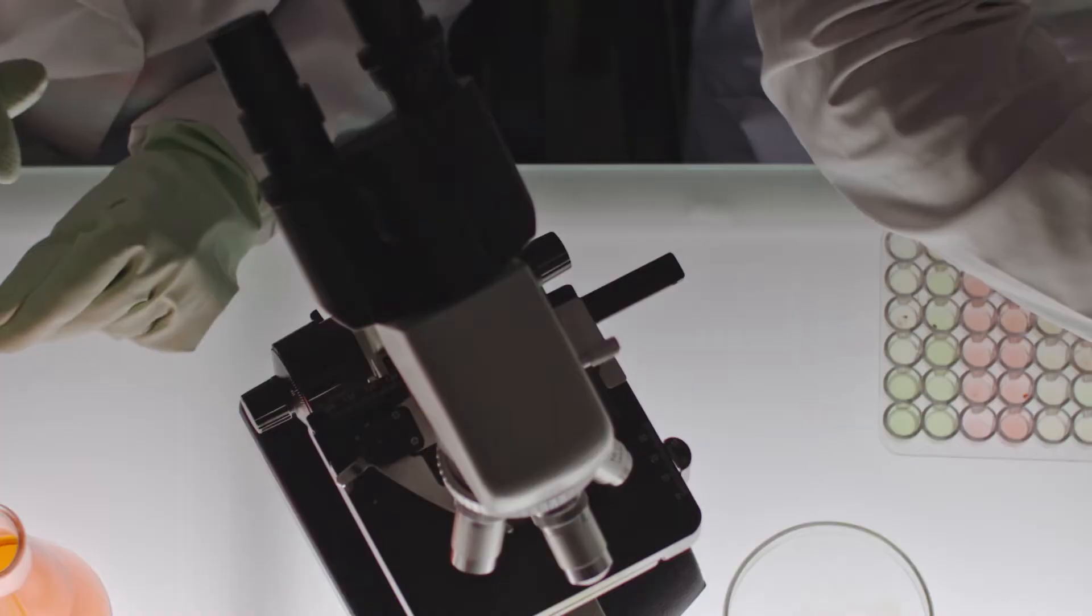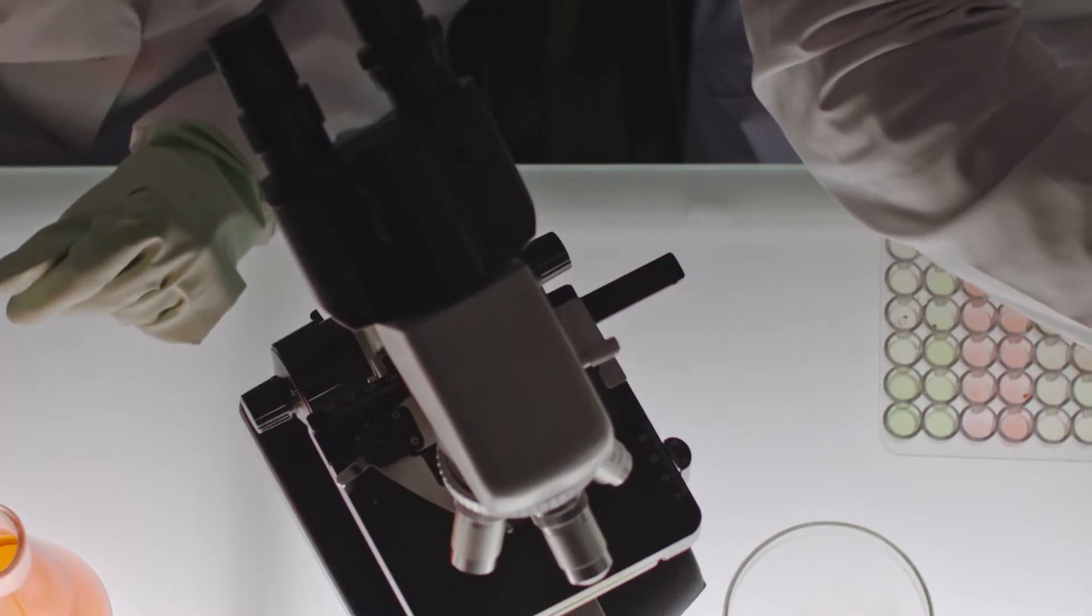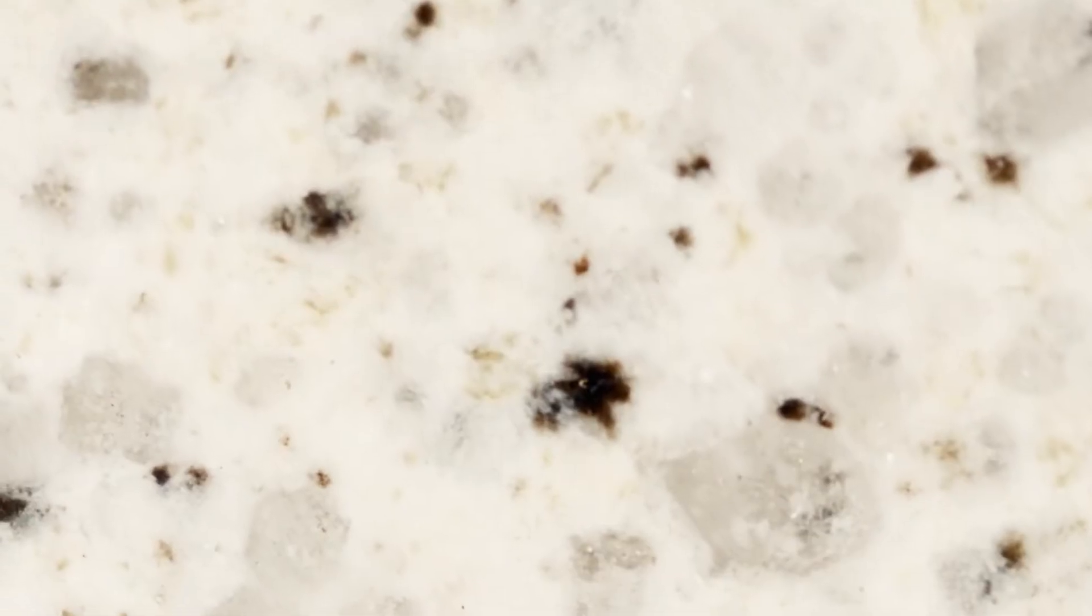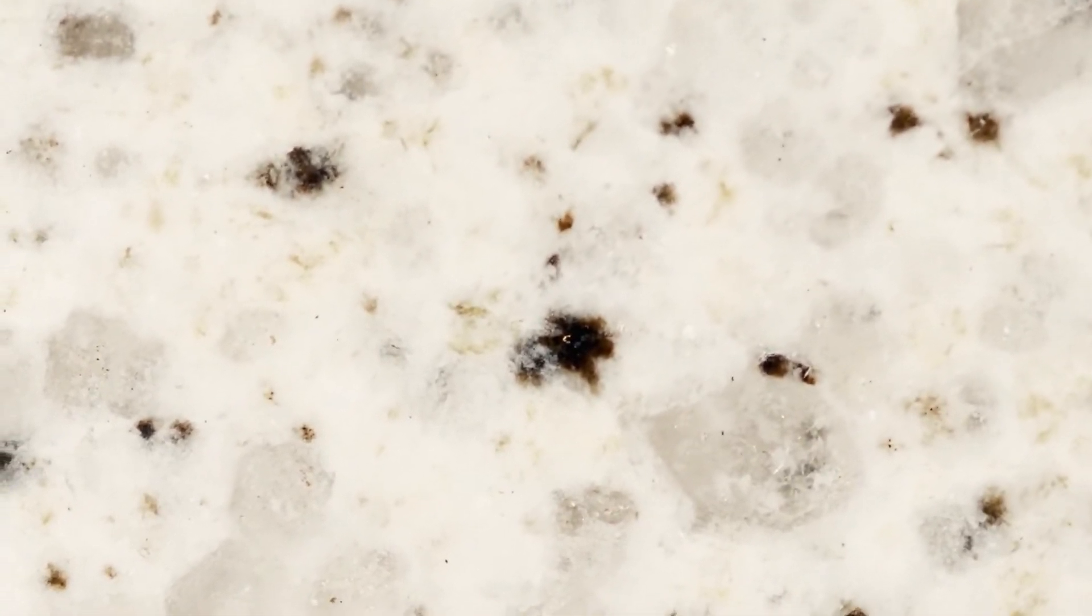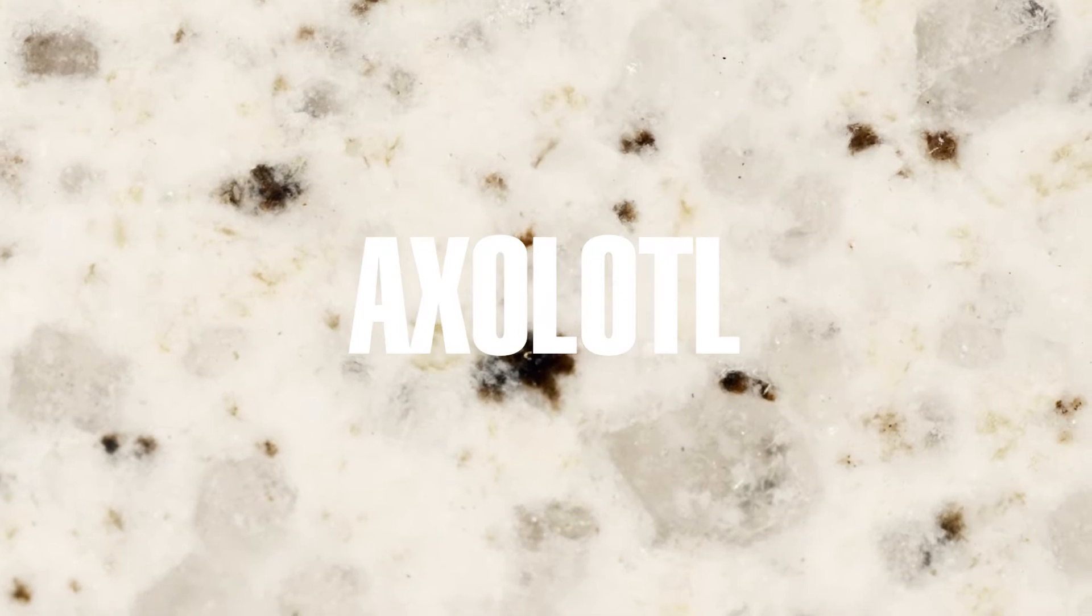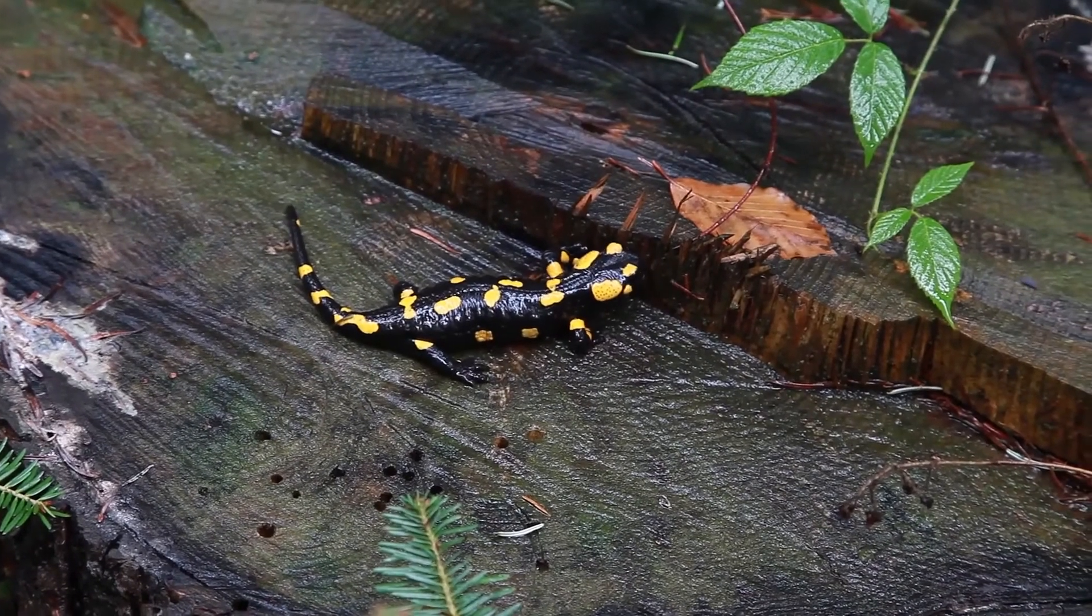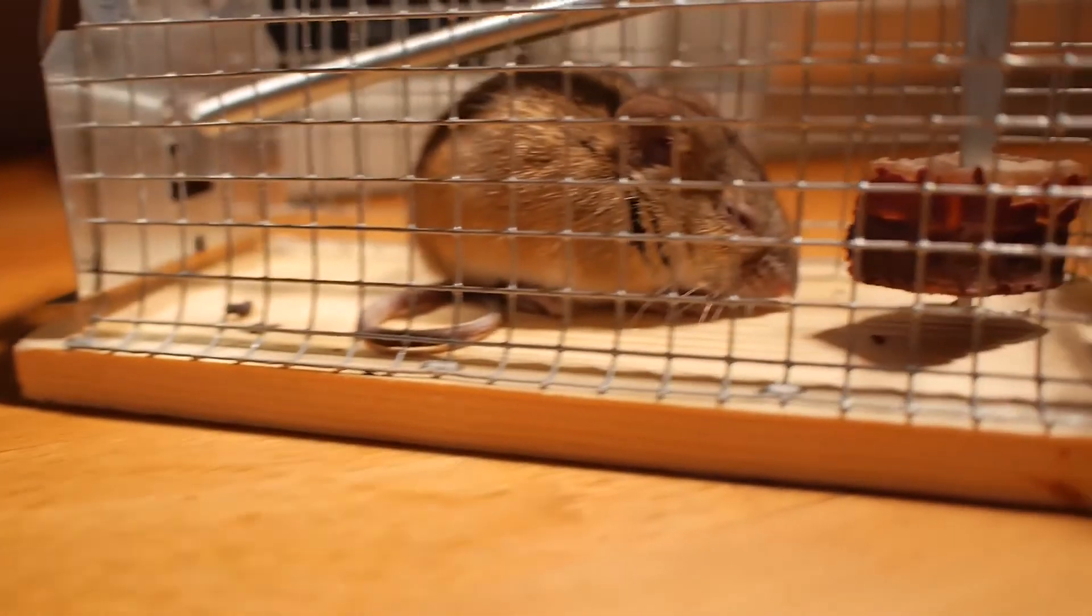A team of scientists led by James Godwin at the MDI Biological Lab in Bar Harbor, Maine has come a step closer to unraveling that mystery with the discovery of differences in molecular signaling that promote regeneration in the axolotl, a highly regenerative salamander, while blocking it in the adult mouse, which is a mammal with limited regenerative ability.